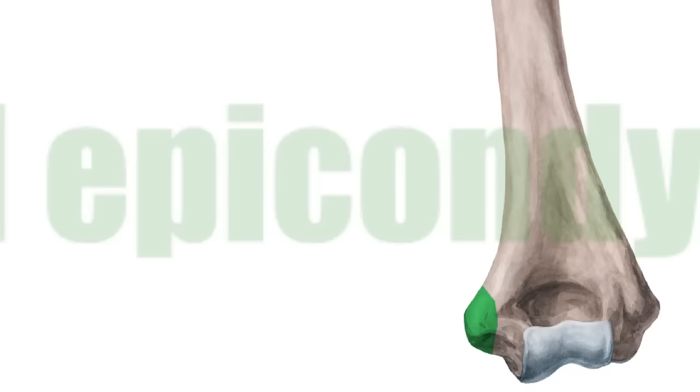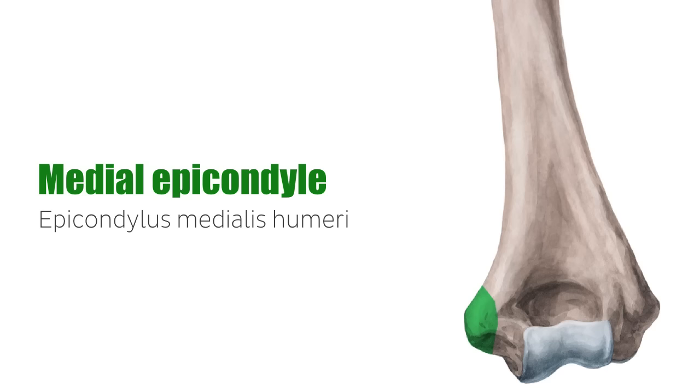And here, you now see the medial epicondyle of the humerus. This medial protuberance serves as an origin point for the flexor muscles of the forearm.